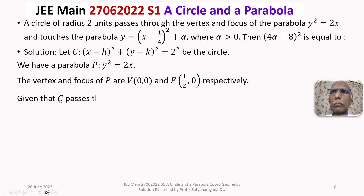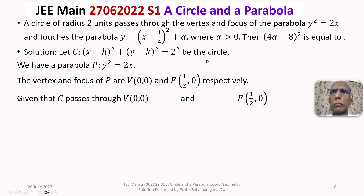It is given that circle C passes through V(0, 0) and focus F(1/2, 0). Substituting (0, 0) into the circle equation gives h² + k² = 4. Substituting (1/2, 0) gives (1/2 − h)² + k² = 4.